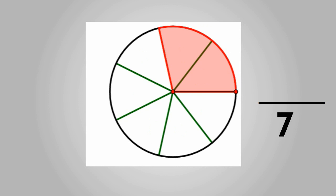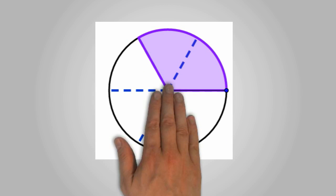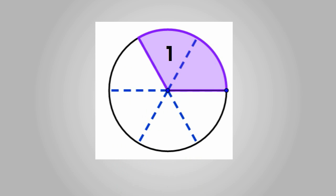We have two of those pieces shaded so that would be our top number, also called the numerator. The next circle has been divided into six pieces and two of those have been shaded. We can write this as 2 over 6.